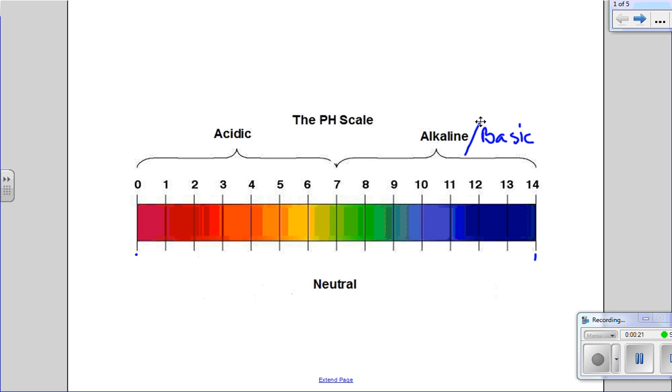So pH is a scale that's been used for quite a while. pH is a measure of hydrogen ions in solution. It's a logarithmic scale, it doesn't matter. All you need to know is to measure the hydrogen ions in solution.